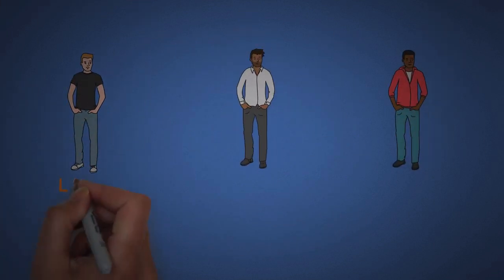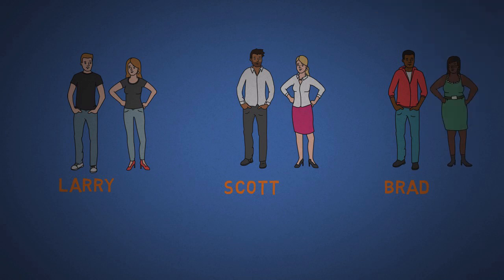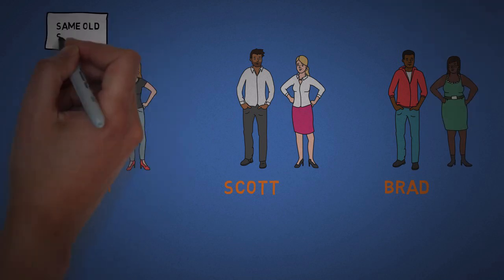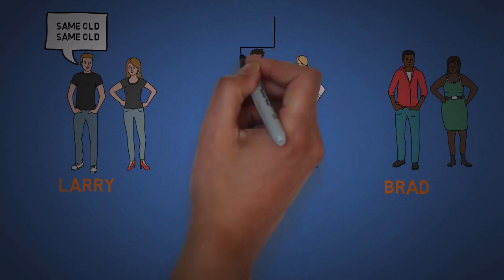Let's meet three friends: Larry, Scott, and Brad. Right now, each of them earns $50,000 a year, each is married, and each has a little bit of that marriage flab. Larry thinks he's happy but complains occasionally that nothing ever changes.